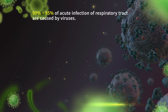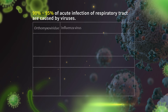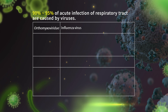Actually, 90 to 95% of acute infections of the respiratory tract are caused by viruses. There are many viruses associated. The first family is Orthomyxoviridae — you should remember that 'viridae' refers to a family name. Influenza virus belongs to Orthomyxoviridae. 'Ortho' means straight, 'myxo' means mucus, meaning the virus can invade humans through the mucus membrane.